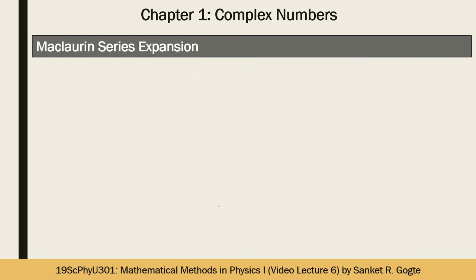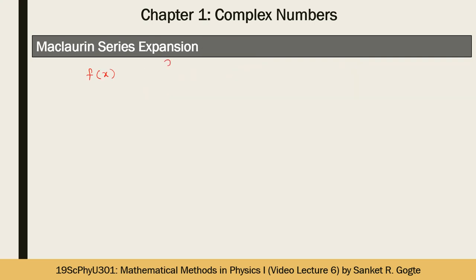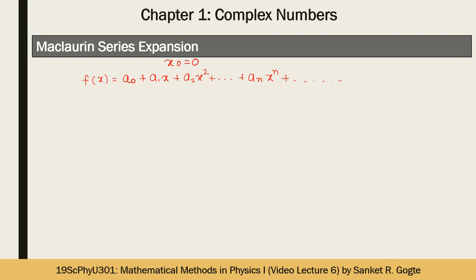We will consider a particular case called the Maclaurin series expansion. This is a power series expansion with x₀ = 0. So in this series x₀ is 0, and the function f(x) becomes a₀ + a₁x + a₂x² + ... + aₙxⁿ + ..., an infinite series. We first need to find out the coefficients to plug into the right-hand side.